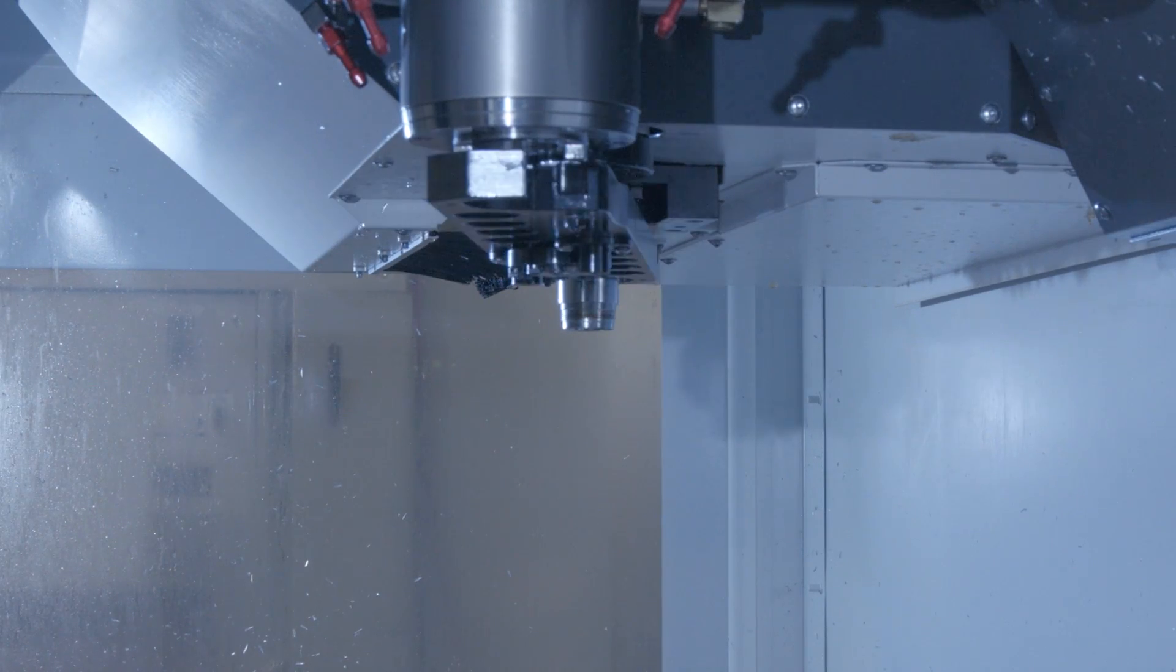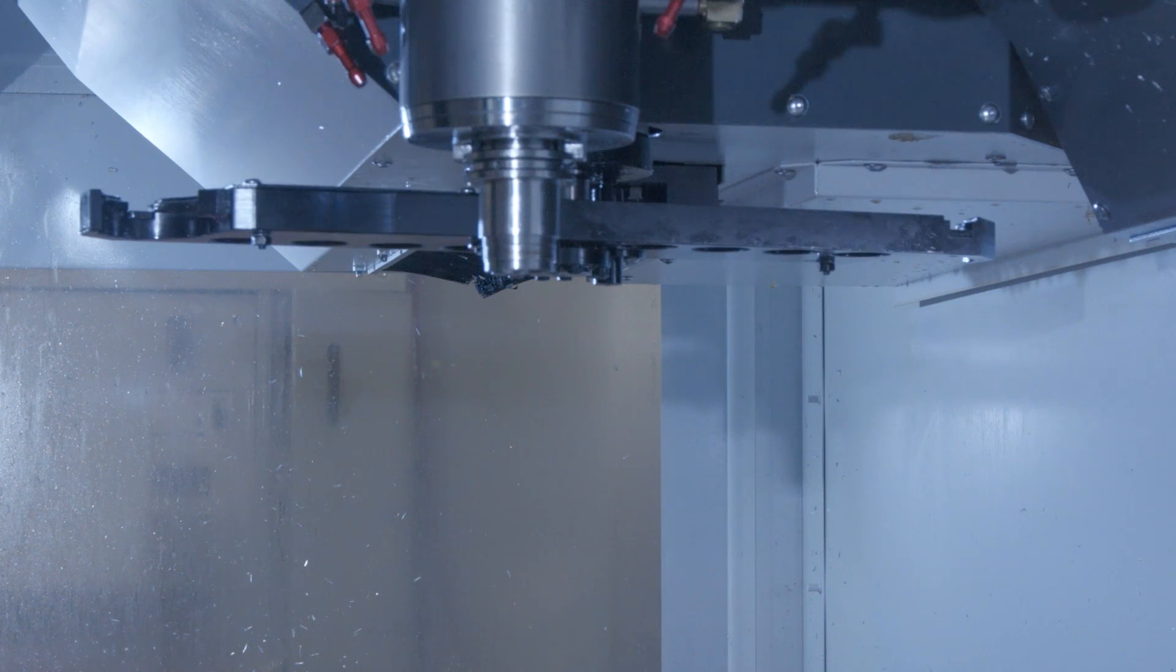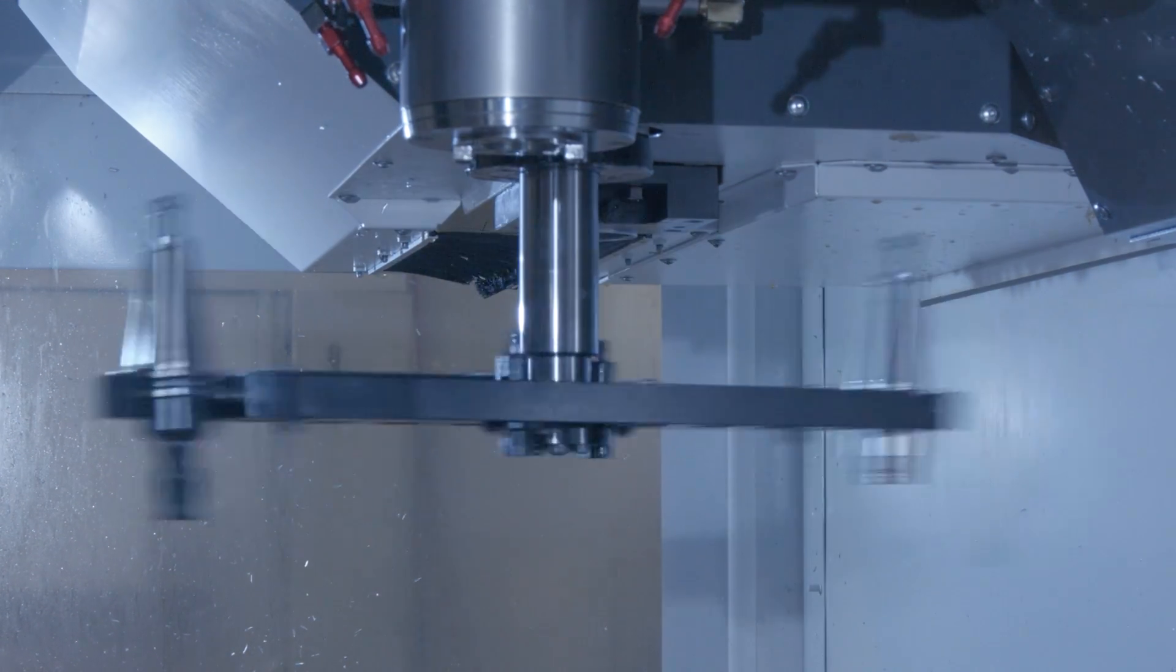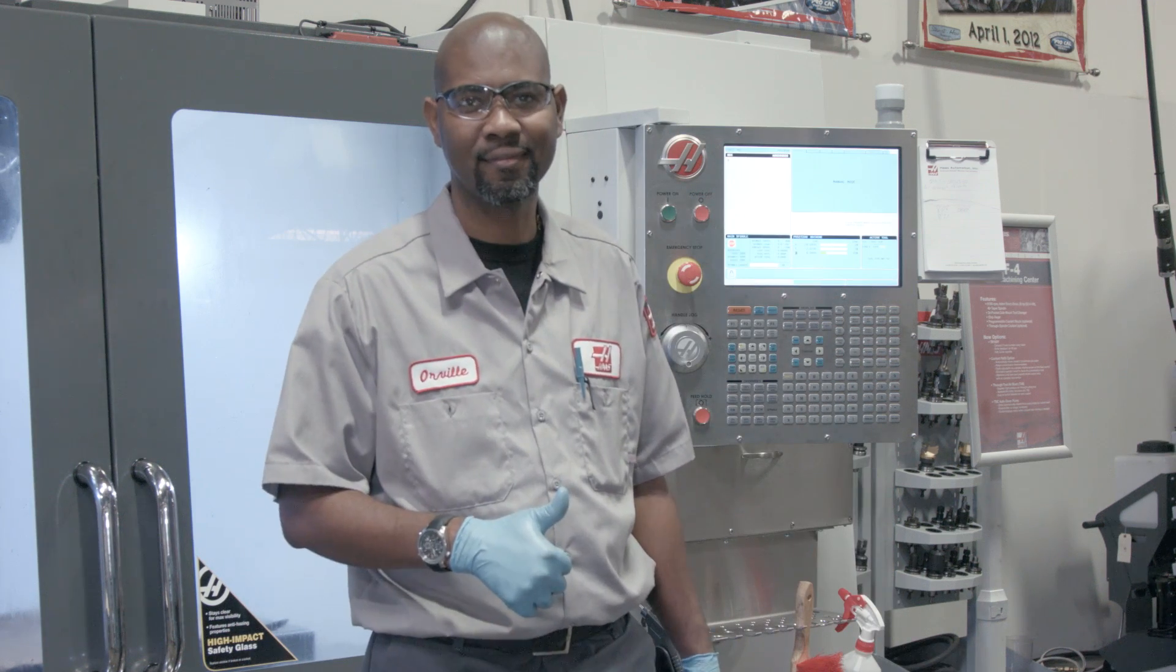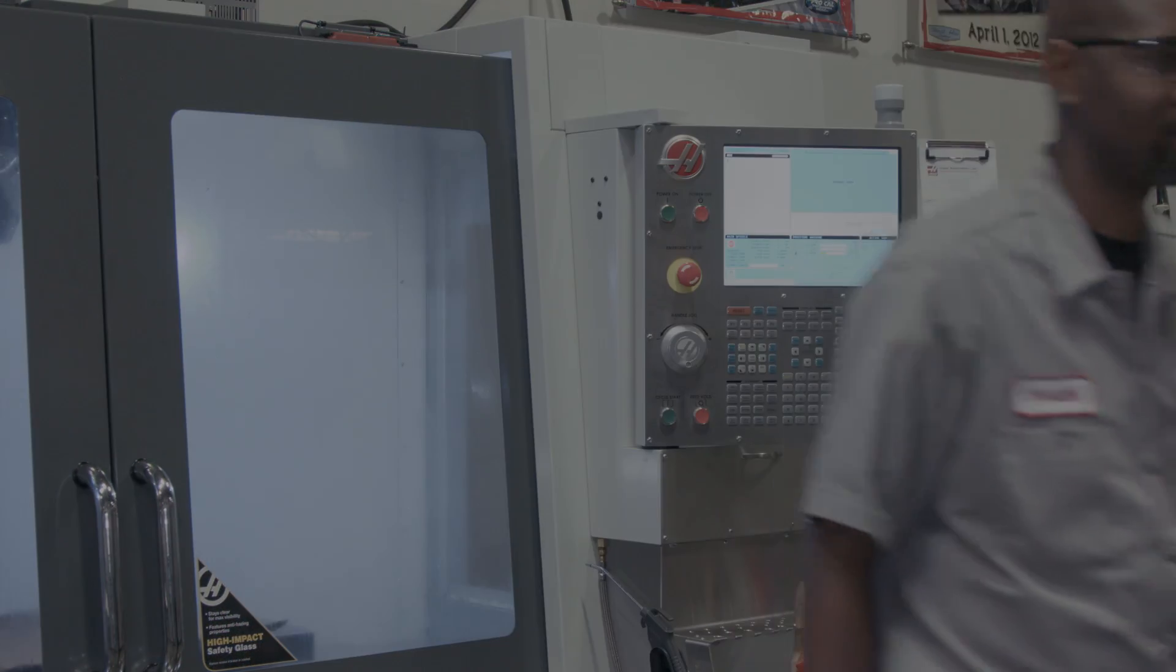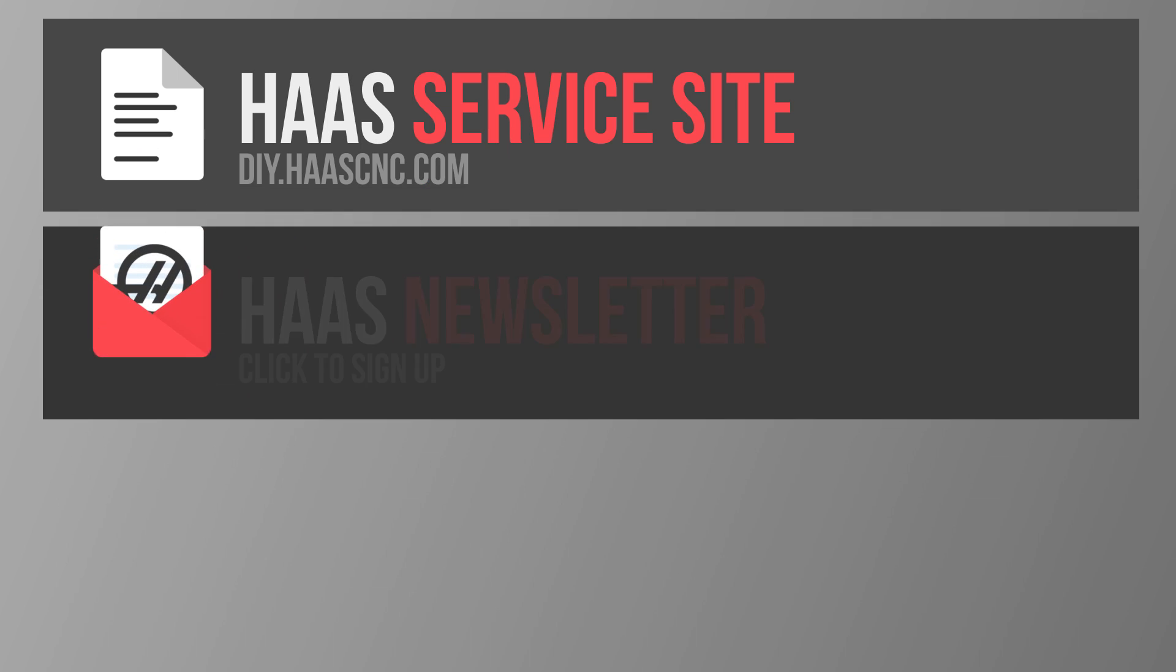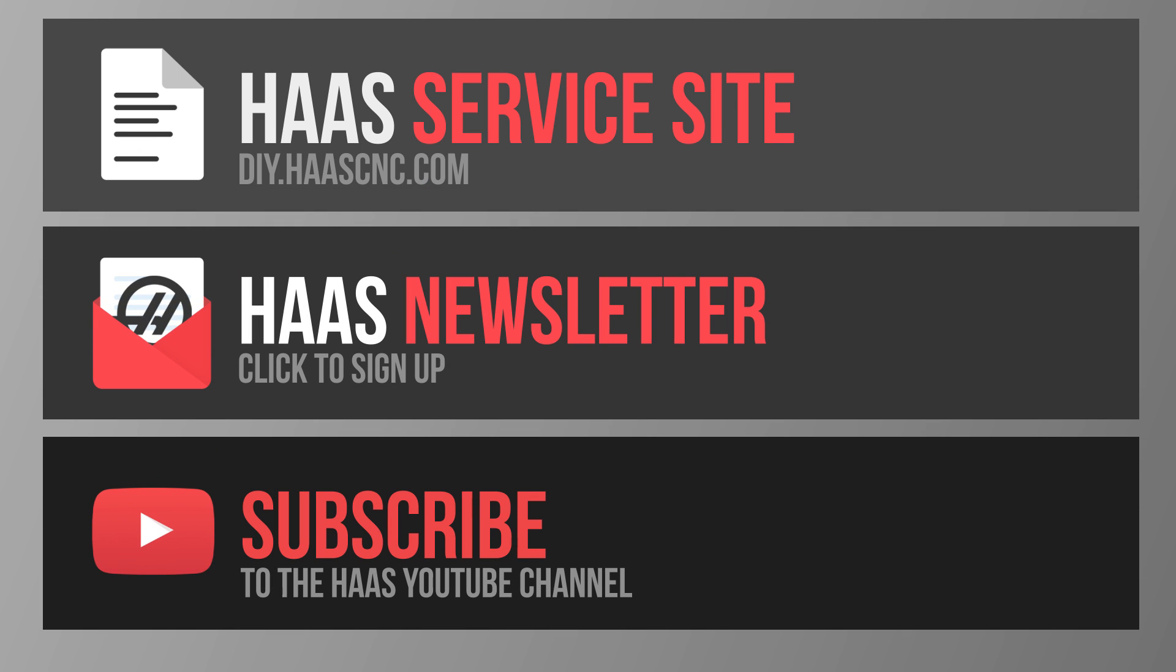You should command several tool changes to make sure everything works correctly. This wraps up the double arm maintenance video. To order replacement parts for your double arm, click on the link below and don't forget to visit DIY.HaasCNC.com. Thanks for watching.